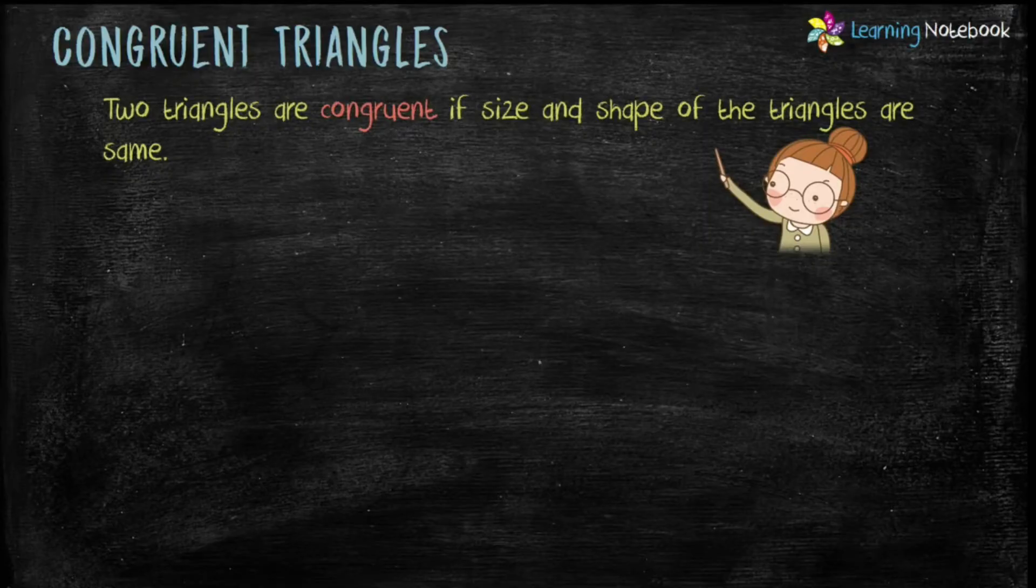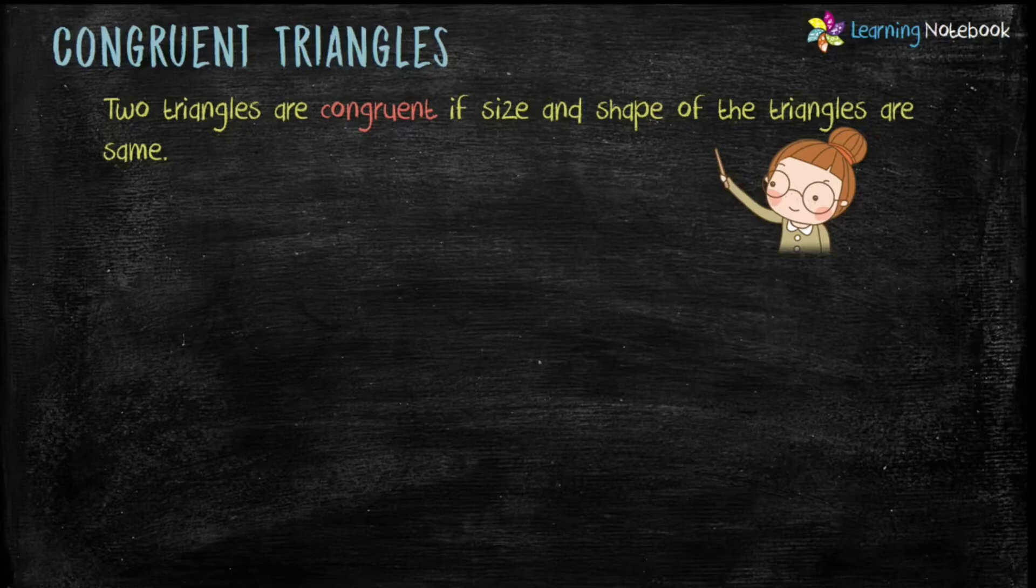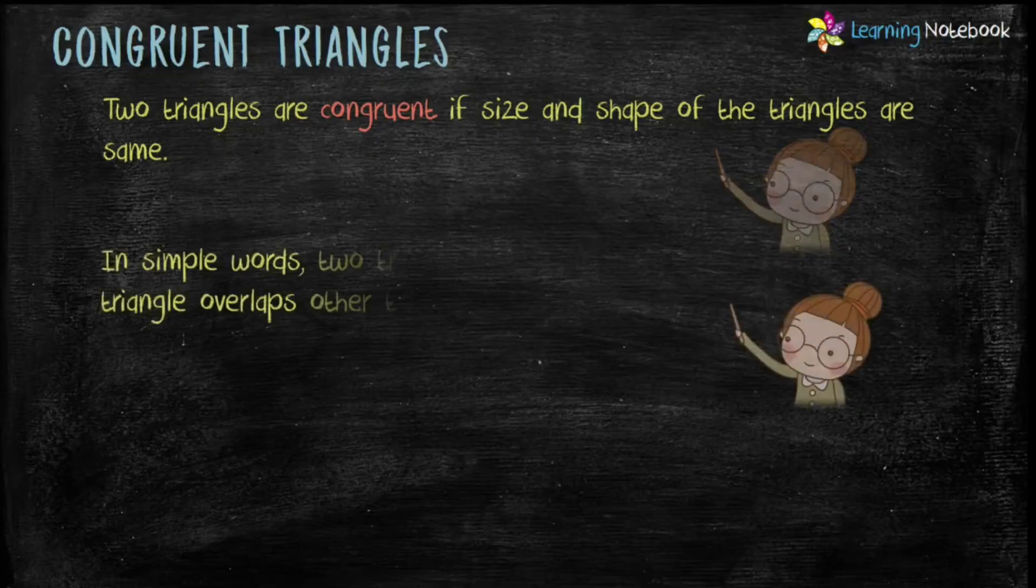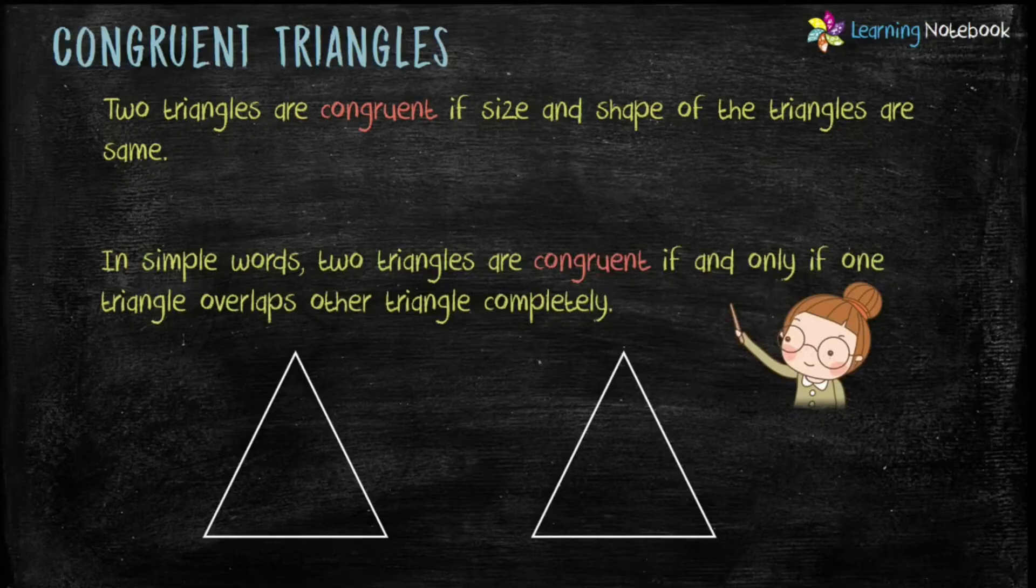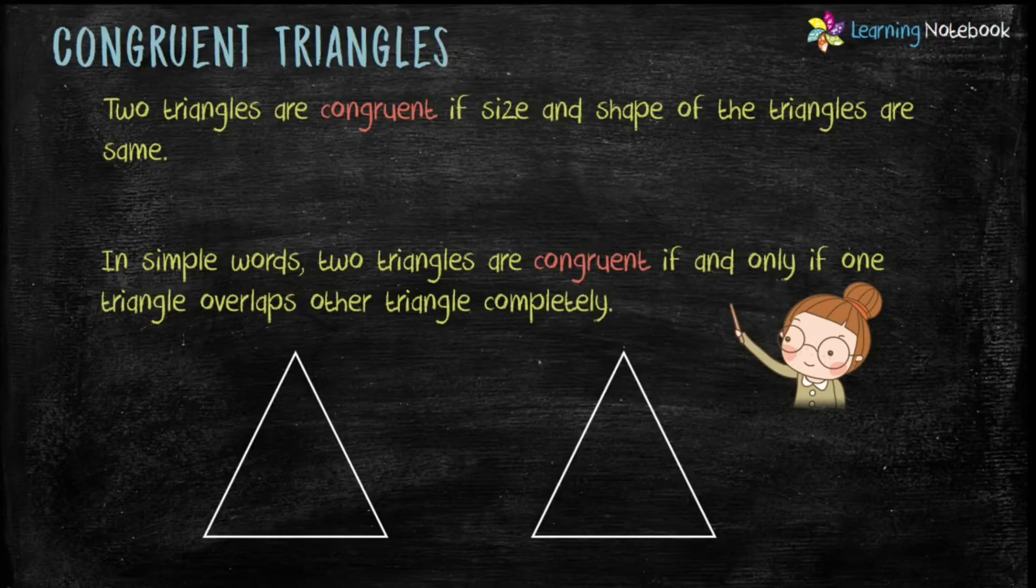So let's first revise what are congruent triangles. Two triangles are congruent if size and shape of the triangles are the same. In other words, two triangles are congruent if and only if one triangle overlaps the other triangle completely.